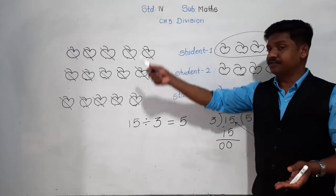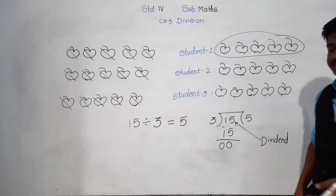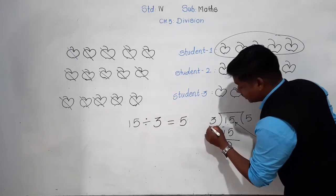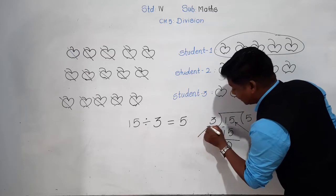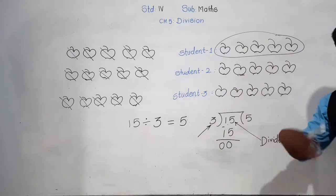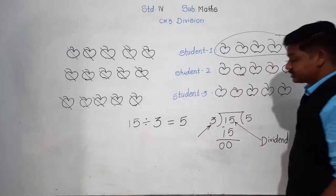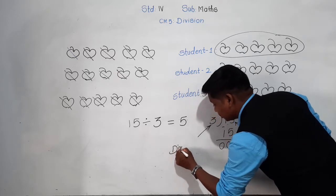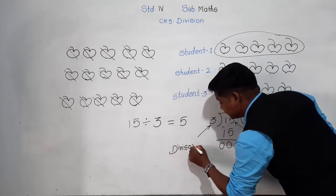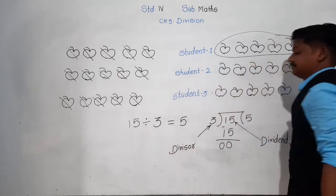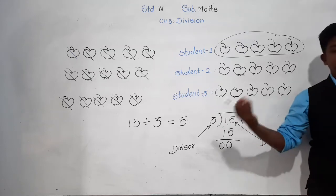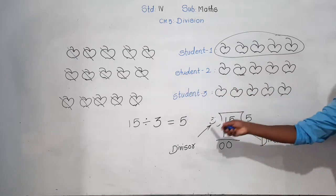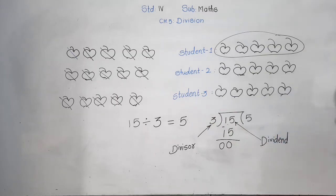The number by which we divided — we divided 15 apples among how many students? 3 students. So the number by which we divided is called the divisor. 3 is the divisor here. The number by which we divided 15 is 3, so 3 is called the divisor.